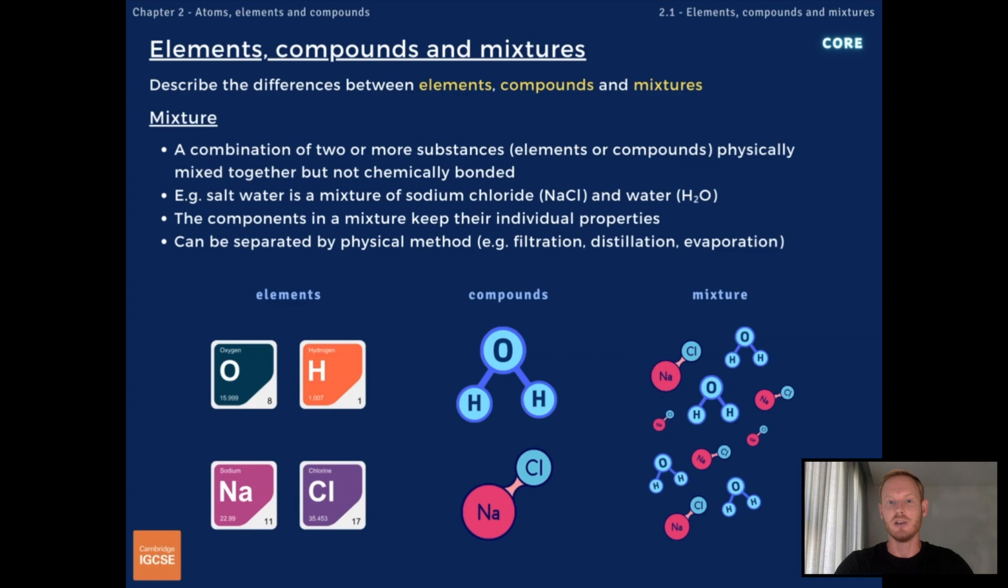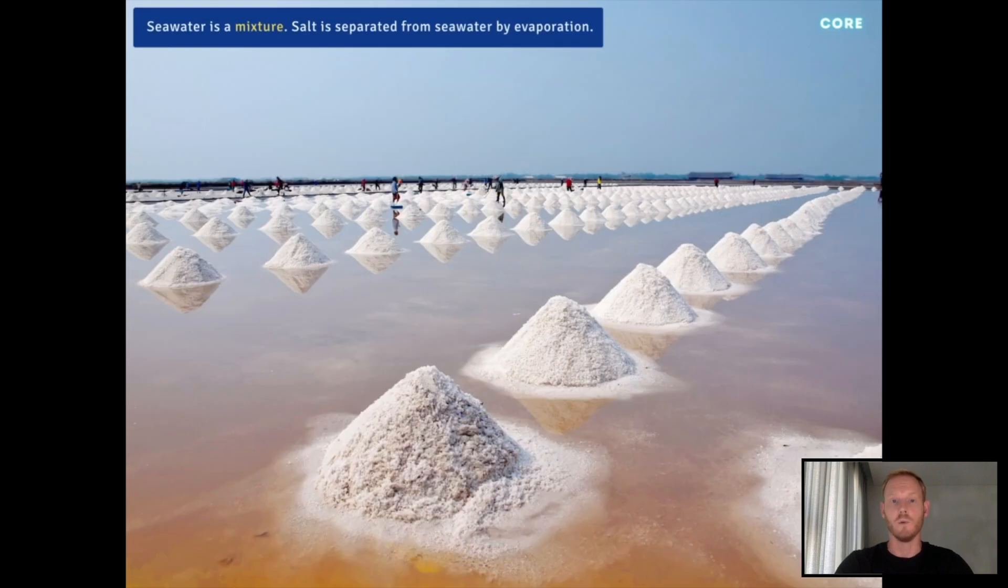Finally, mixtures contain two or more elements and or compounds in varying proportions. Mixtures do not have a chemical formula. The components in a mixture keep their individual properties and can be separated by physical methods like distillation and evaporation because they're not chemically bonded. For example, salt water is a mixture made of the components sodium chloride and water. We know it's a mixture because sodium chloride, the salt, can be physically separated from water by evaporation.